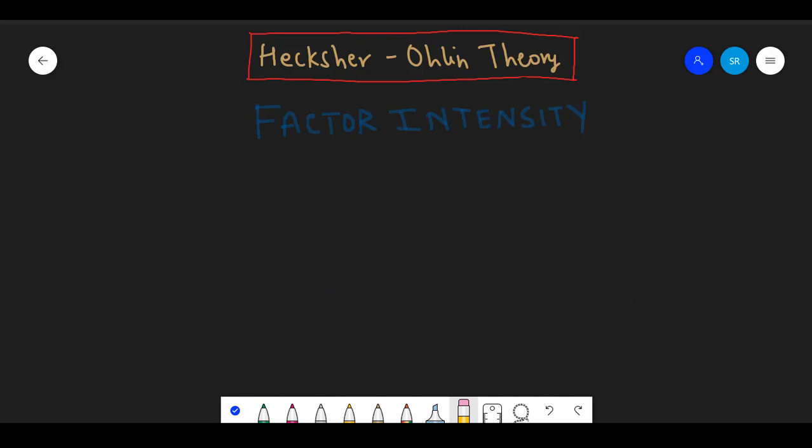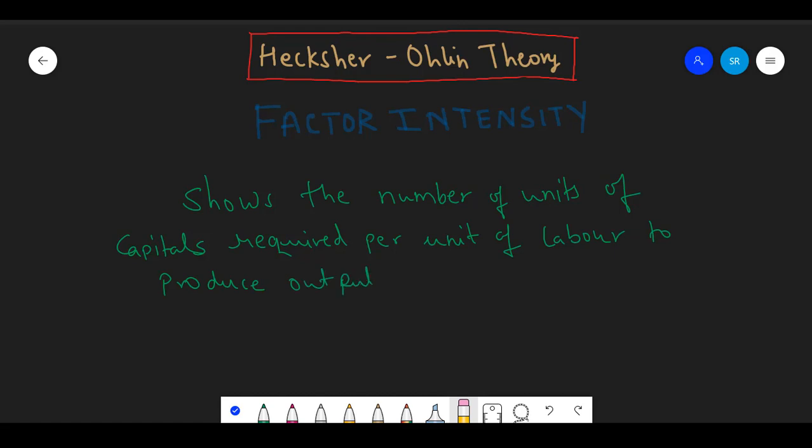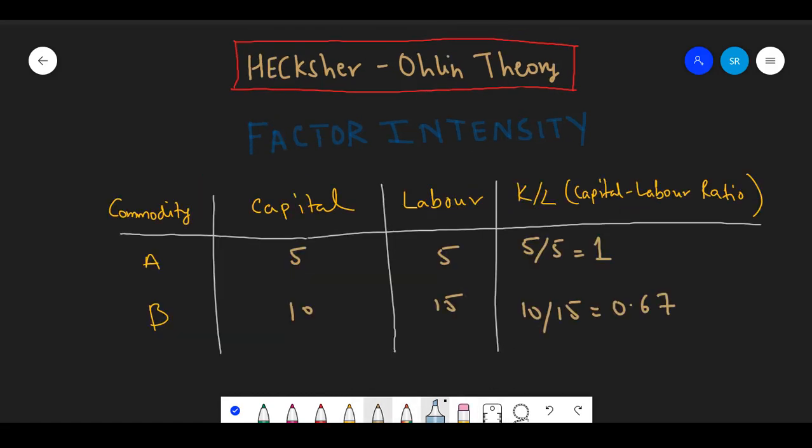Now let us understand factor intensity. Factor intensity shows the number of units of capital required per unit of labor to produce a particular commodity. We can best understand this by the following schedule.